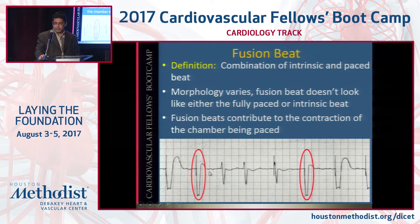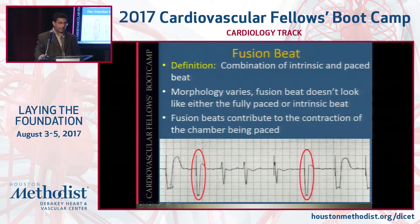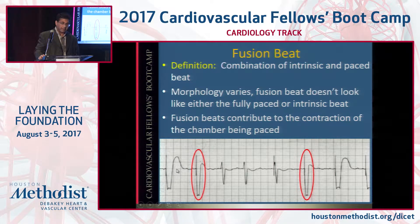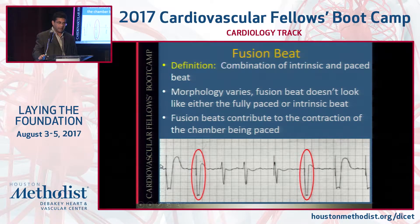You can identify fusion on the EKG: you see a pacing spike with a wide QRS — that's a fully paced beat. This patient has a-fib, so you also see some conducted complexes that are narrow, much narrower than the paced beats. Then you see a pacemaker spike followed by a QRS that's somewhere halfway between the paced QRS width and the narrow beat — that's a fusion beat.